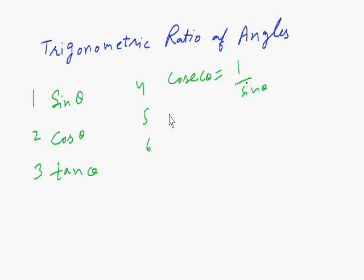Sec theta is just the reciprocal of cos theta, and cot theta is just the reciprocal of tan theta, one divided by tan theta.